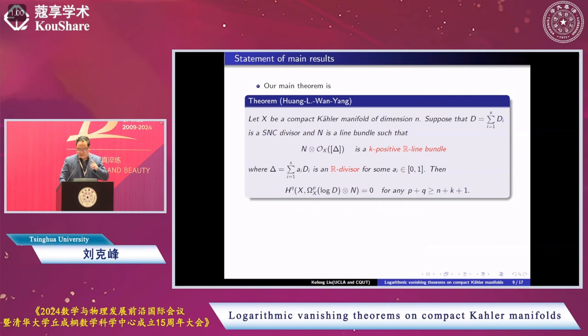The theorem we proved, the main result is the following: We consider a compact Kähler manifold of dimension n, and suppose we have a simple normal crossing divisor as defined above, and we consider a line bundle such that N tensor O_X(-delta) is a line bundle.